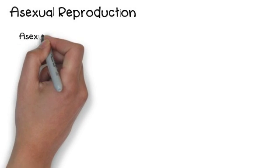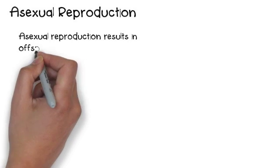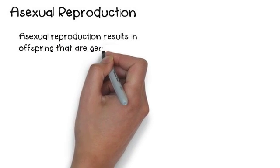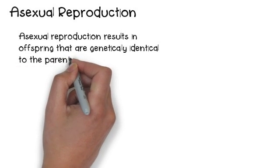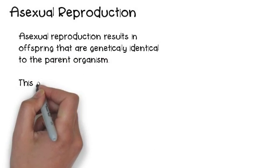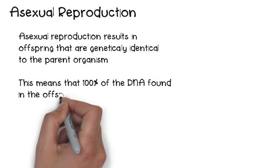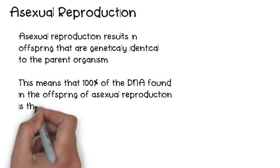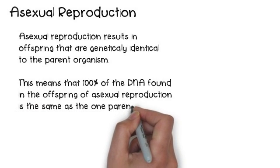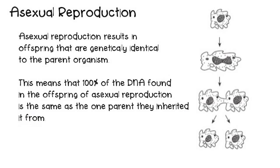Asexual reproduction is different. They both produce offspring, but asexual reproduction results in an offspring that is genetically identical to the parent organism. This means that 100% of the DNA found in the offspring of an asexually reproducing organism is the same as the one parent they inherited from — so they're identical.